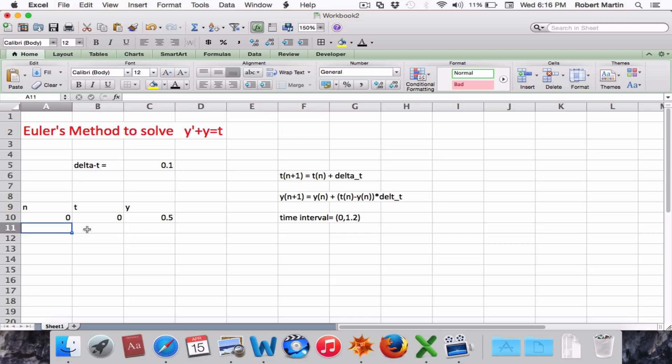Now, the formula for the next t value is given here as a reminder. So t(n+1) is equal to previous t value plus delta t. So to insert that in this cell, we select the cell and press equal to enter a formula. Now, I press the cell above it, which is t sub n, the previous value of t,